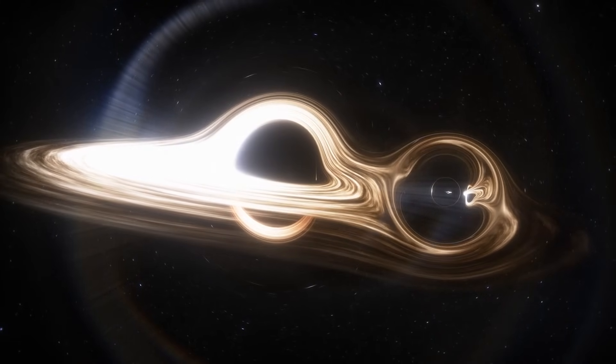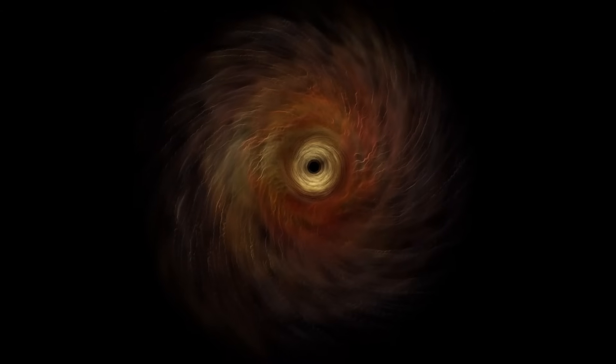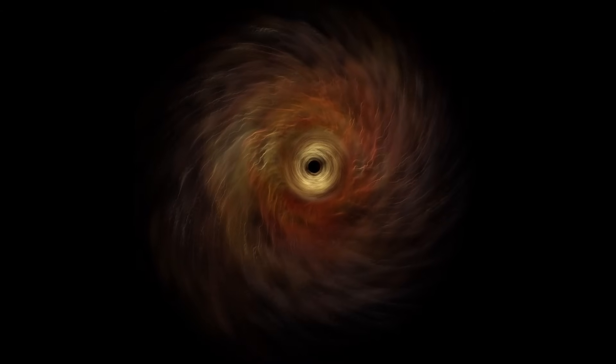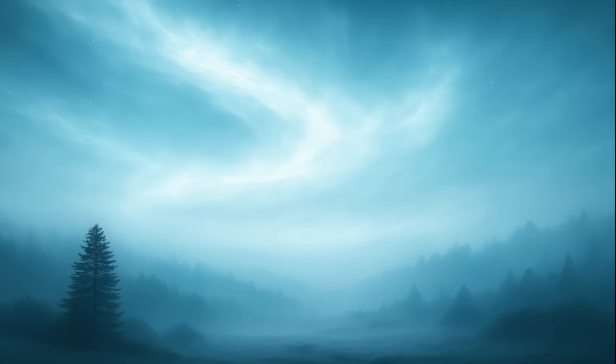Most black holes wear an accretion disk, a ring of superheated gas blazing in X-rays and ultraviolet. Approach one of these monsters, and the sky is no longer blue.